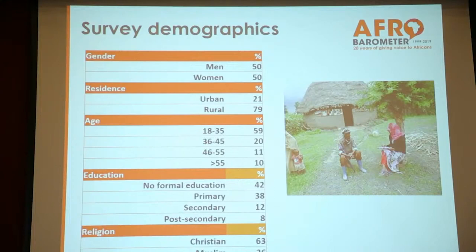Let me take you to the survey demographics. The Ethiopian population is almost proportionally 50-50 male to female, and so is the data. In terms of residence, 21% of Ethiopians live in urban areas and 79% in rural areas — and so is the data. The age group is quite diverse, ranging from 18 to 35 and above. Ethiopia is a young country, and 60% of the young people are represented in our sample. Education levels range from no formal education through primary, secondary, and post-secondary. In terms of religion, the sample is as diverse as the Ethiopian people: Christians 63%, Muslims 36%, other faiths 1%.